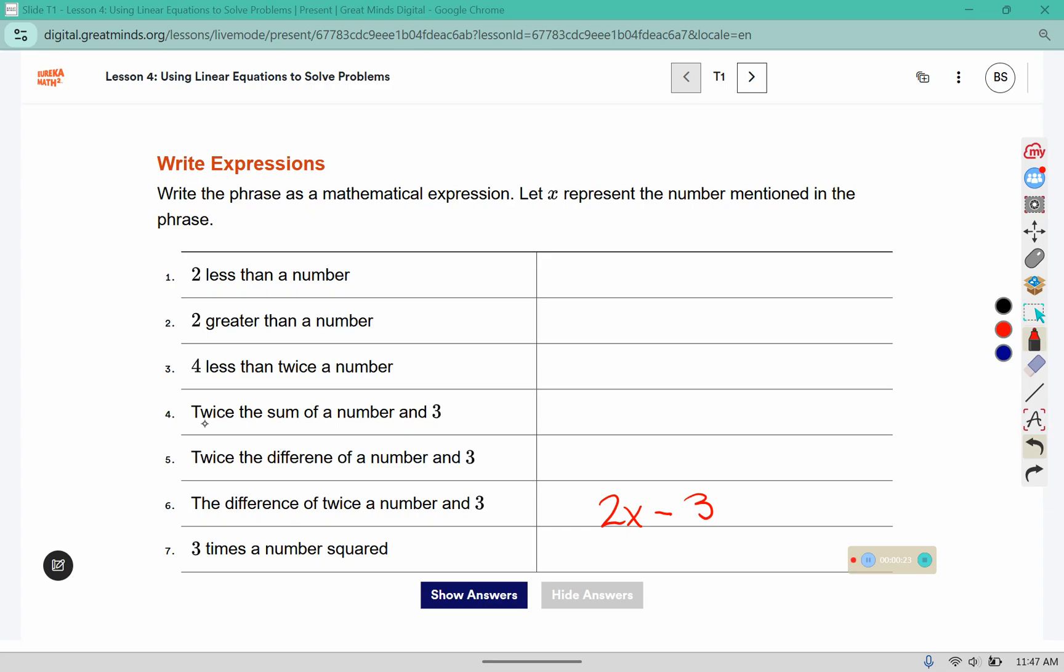If it says twice the sum or twice the difference, that's a grouping symbol, so you're going to group the difference of the number and three and the sum of the number and three, and then multiply those whole things by two. This one says three times a number squared.